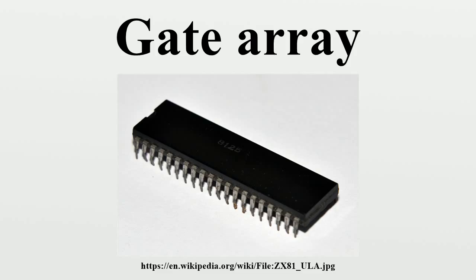Creation of a circuit with a specified function is accomplished by adding a final surface layer or layers of metal interconnects to the chips on the master slice late in the manufacturing process, joining these elements to allow the function of the chip to be customized as desired. This layer is analogous to the copper layer of a printed circuit board.